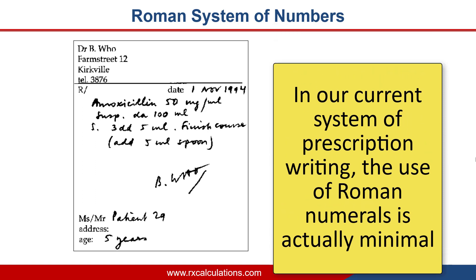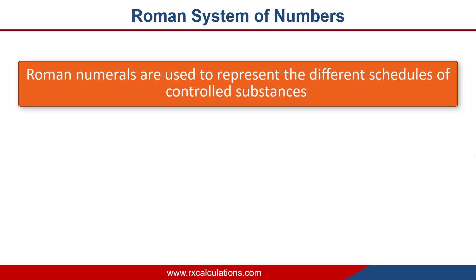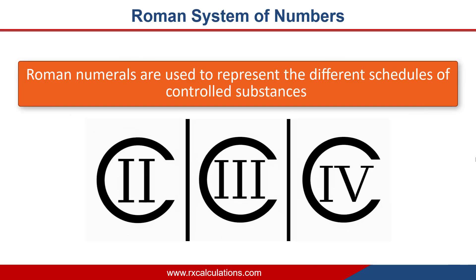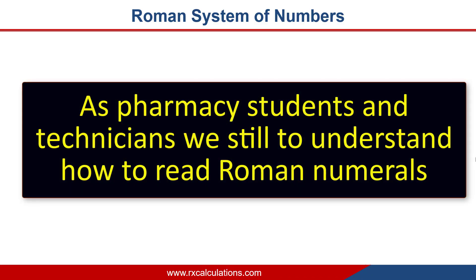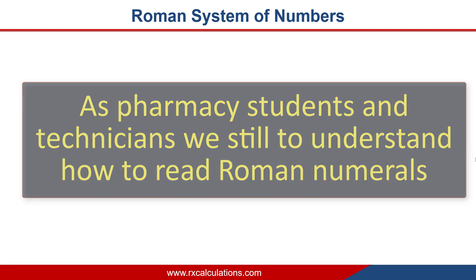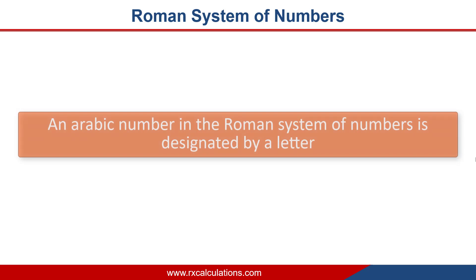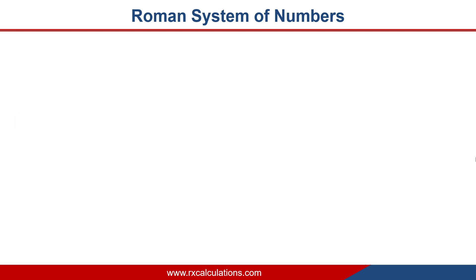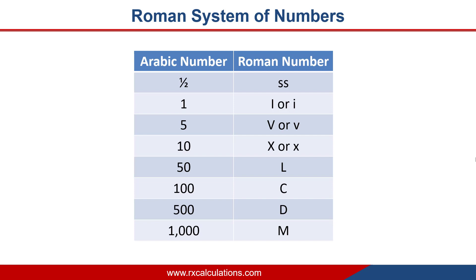However, Roman numerals are used to represent the different schedules of controlled substances — schedule 1, 2, 3, 4, and 5 — and some physicians still use them in dosage calculations. Therefore, as pharmacy students, pharmacy technicians, and pharmacists, there is still a need to understand how to read Roman numerals. An Arabic number in the Roman system is designated by a letter, and there are stem numbers used in the Roman system as shown in the table.